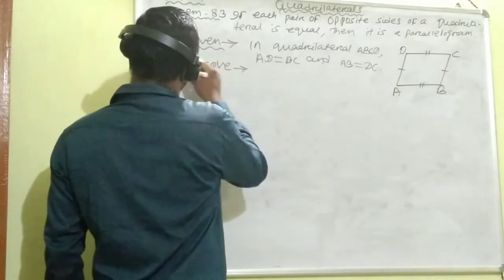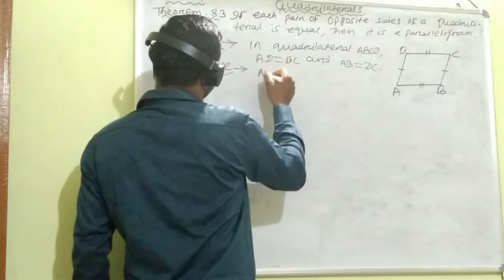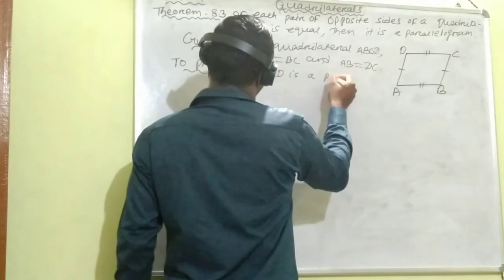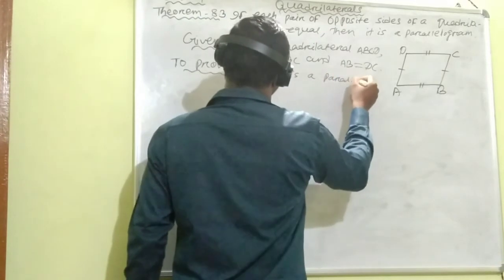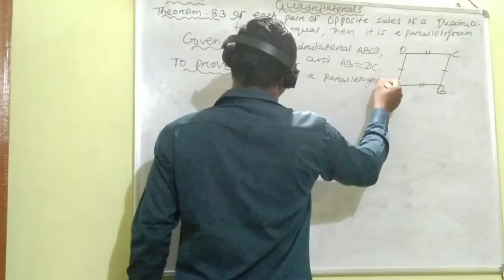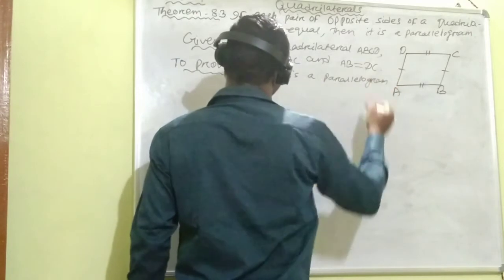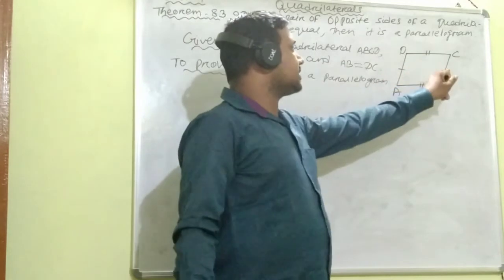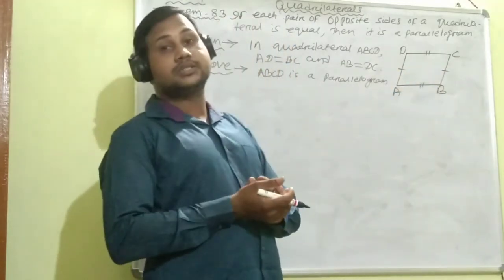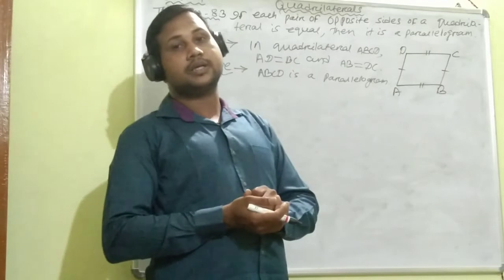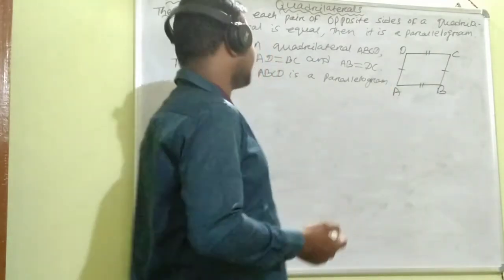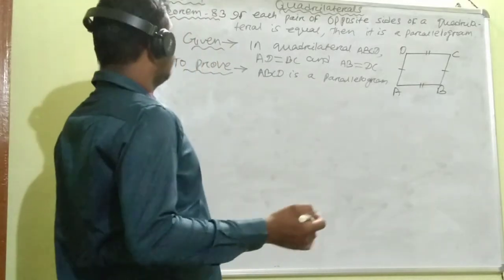To prove ABCD is a parallelogram, that means if the opposite sides of the quadrilateral are parallel to each other, then we can prove it as a parallelogram. Now come to proof. Here first we have to show triangle ABC congruent to triangle CDA.